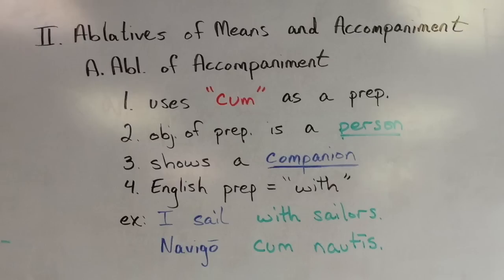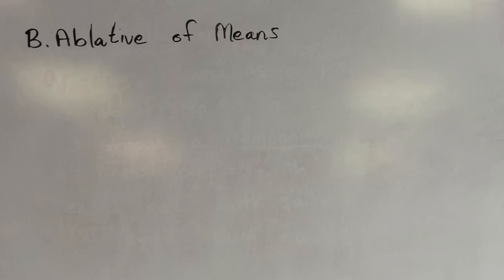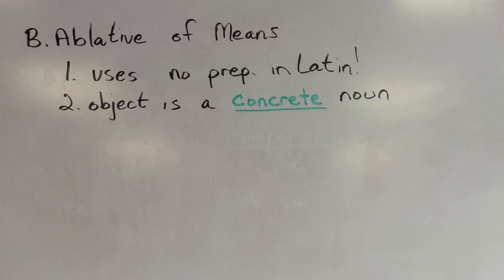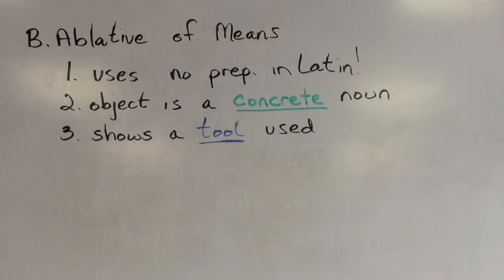This is in contrast to the ablative of means, which also uses the English word 'with.' However, the ablative of means does not have a preposition that it uses in Latin. Instead, it just uses the ablative case without any preposition in front of it. The object of the ablative of means is always a concrete noun, and it shows a tool being used to do something.